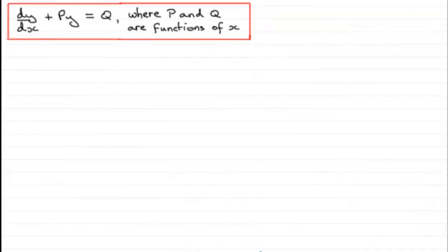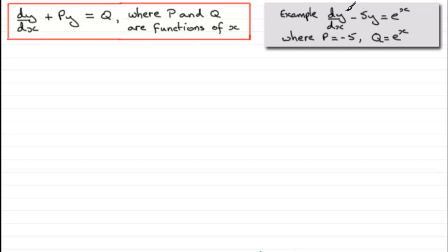In this video I want to show you how we solve first-order differential equations that have the particular form dy/dx + py = q, where p and q are functions of x. For example, an equation like dy/dx - 5y = e^x. Comparing this to the standard format, p is -5 and q is e^x, and a function of x can be a constant.